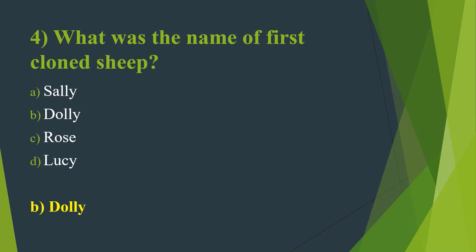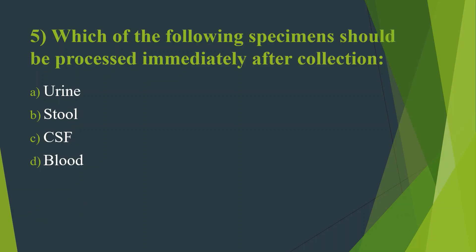Fifth question: Which of the following specimens should be processed immediately after collection? Option A, Urine. Option B, Stool. Option C, CSF. Option D, Blood. Answer is Option C, CSF — that is, Cerebrospinal Fluid.